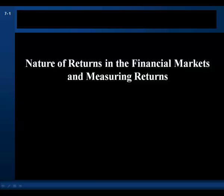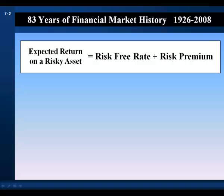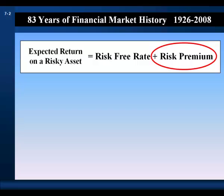This lecture covers the nature of returns in the financial markets and measuring returns. A previous lecture put forward a model where the expected return on a risky asset equals the risk-free rate plus a risk premium — the market required expected return given the asset's risk, and the opportunity cost of capital for discounting cash flows. The risk premium reflects the risk-return relationship in financial markets. If we can price risk, we can price risky financial assets. The key is determining the market price of risk.